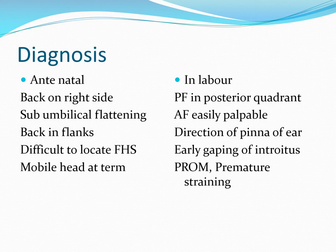In labor, on vaginal examination, the posterior fontanelle will be occupying the posterior quadrant of the pelvis and the sagittal suture will be in the oblique diameter. The anterior fontanelle will be easily palpable and will be in the anterior quadrant. If the posterior fontanelle is felt in the right posterior quadrant, it is a right occipital posterior, and it will be felt in the left posterior quadrant if it is a left occipital posterior. In late labor, there can be a large caput, making identification of the fontanelle difficult — in this case the direction of the pinna will help, as it will be pointing towards the occiput.